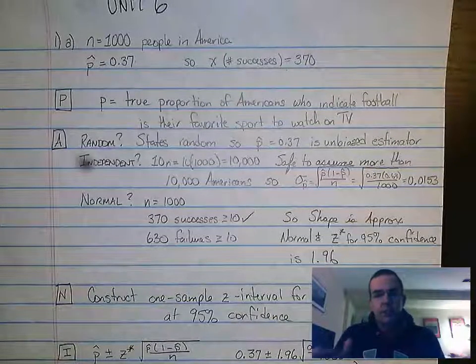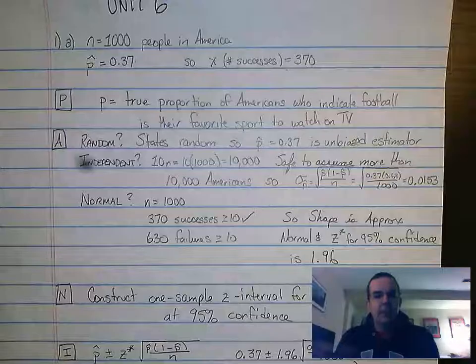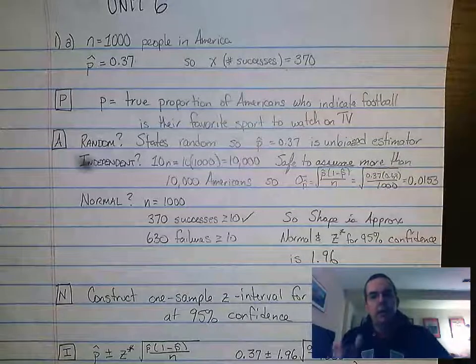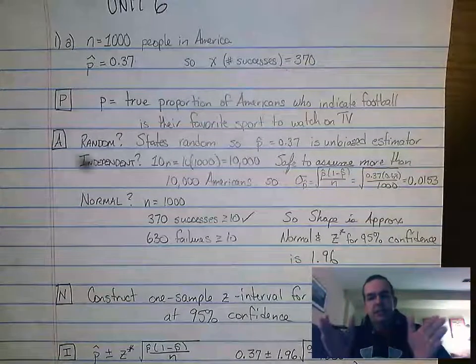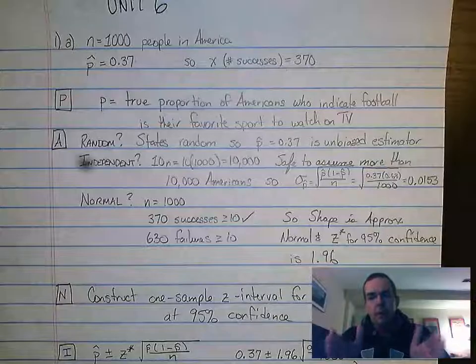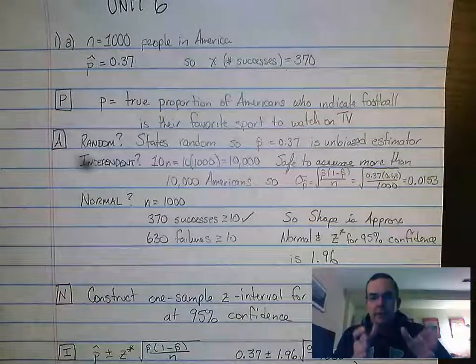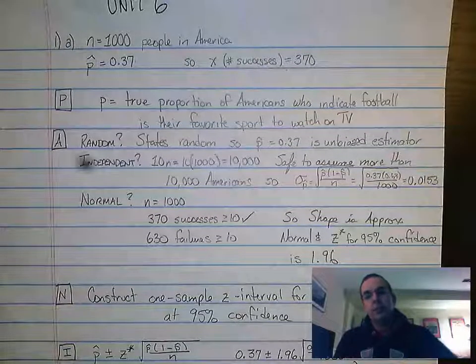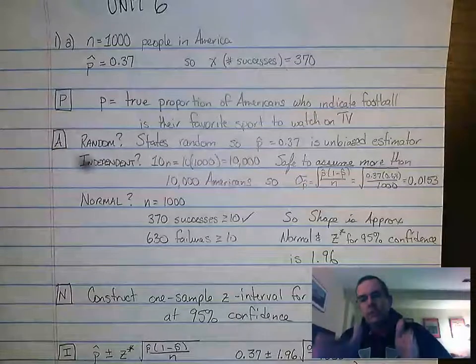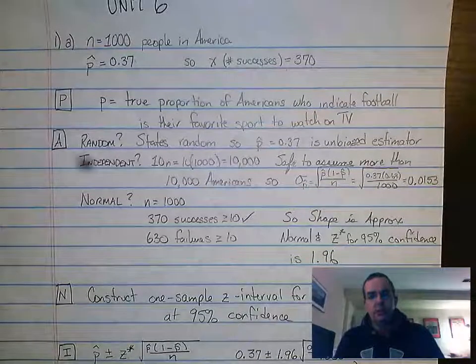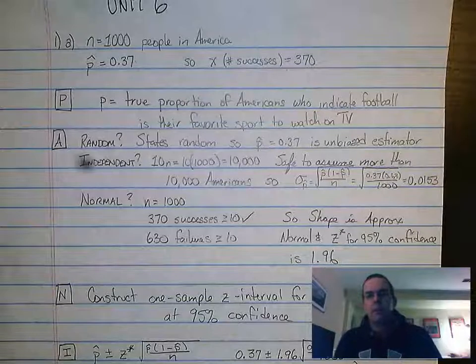Moving on to free response questions for Unit 6, a progress check there. Again, two questions. First question, Unit 6 is all about proportions. So this is all about tests and intervals for proportions. Unit 6 is proportions, Unit 7 is means. So all these questions we're going to talk about right now are all about proportions.